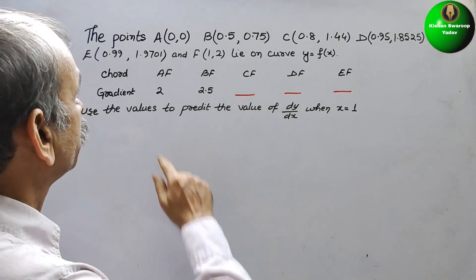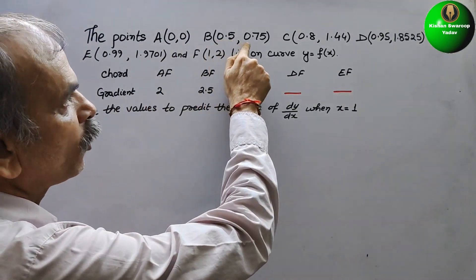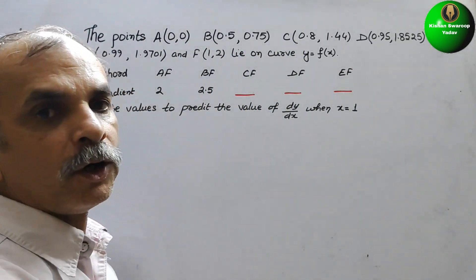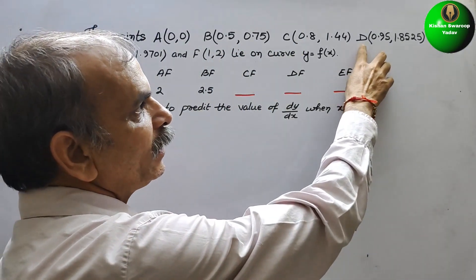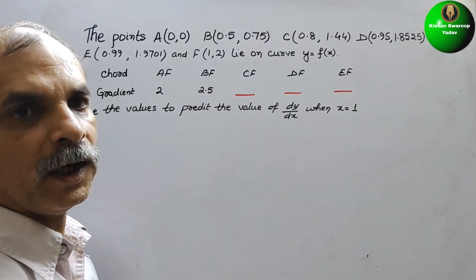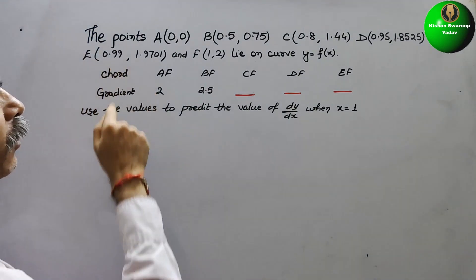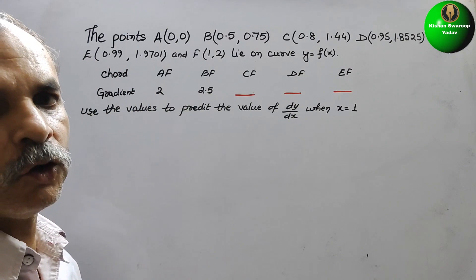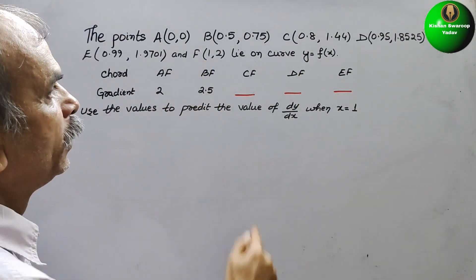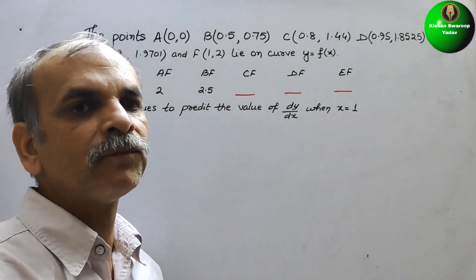Your question is: the points A(0,0), B(0.5, 0.75), C(0.8, 1.44), D(0.95, 1.8525), and E(0.99, 1.9701), and F is (1, 2). These points lie on the curve y is equal to f(x).